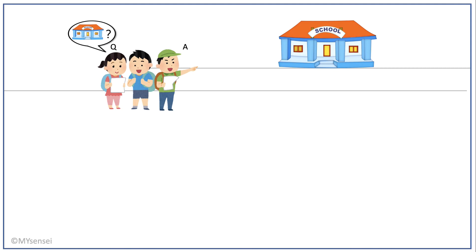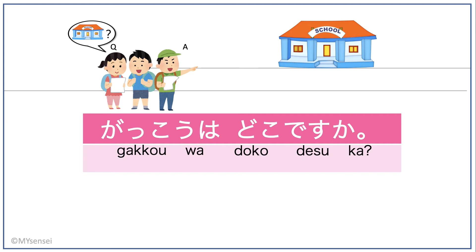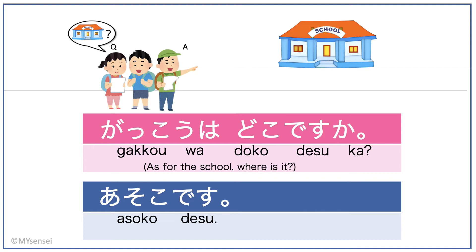How about these kids looking for their school? The girl would ask, 'Gakkou wa doko desu ka?' The boy found it, so his answer would be, 'Asoko desu.' He uses asoko because the school is away from all of them.